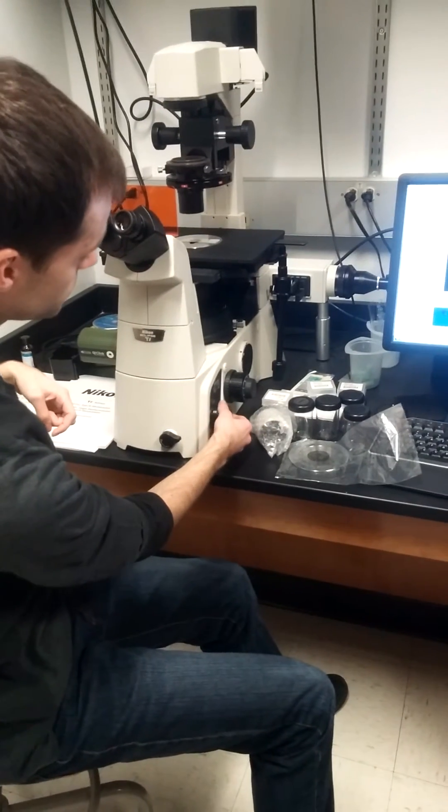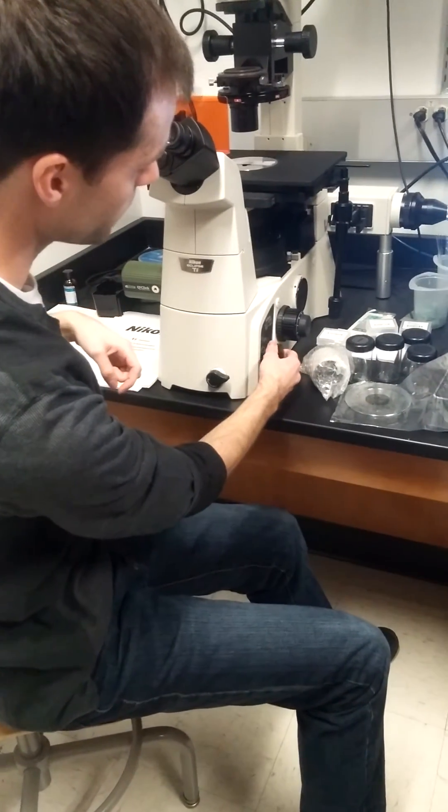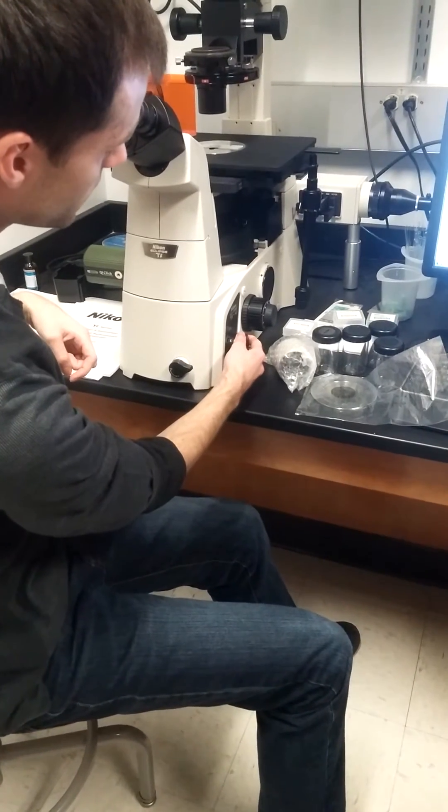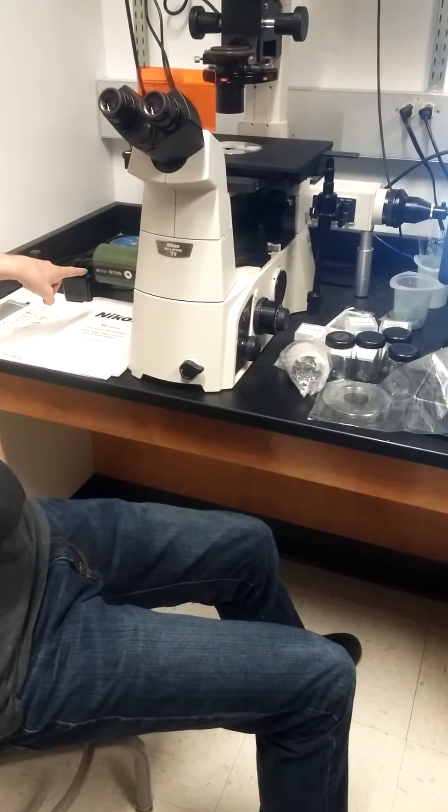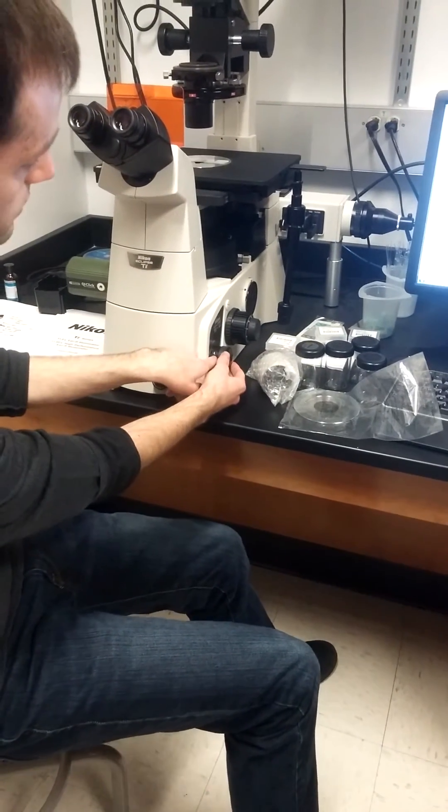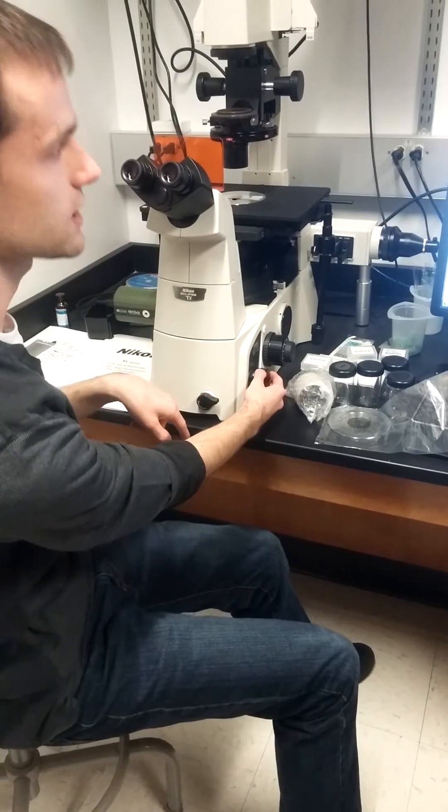And we'll get a black screen because right now we have the light path running through the objective lenses here. So we're going to adjust the port to run through the left-hand port, which is where our camera is located. So basically we just switch from I to the L, which stands for left.